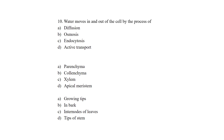Question number 10: water moves in and out of the cell by the process of — what? The four options are diffusion, osmosis, endocytosis, and active transport. Diffusion allows ions and molecules to enter and exit the cell and works for all three states — solid, liquid, and gas. Osmosis is the process used only for water, by which water moves from higher concentration to lower concentration. So the answer is osmosis.